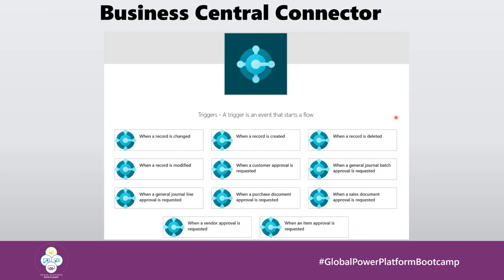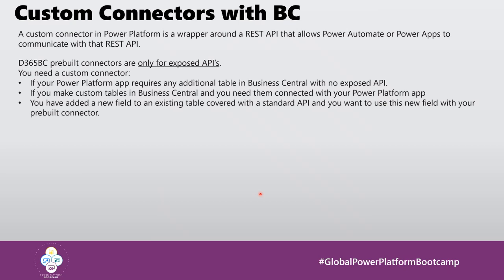A custom connector in the Power Platform is simply a wrapper around a REST API that lets you connect from Power Automate and Power Apps to that REST API. You need a custom connector in Business Central for two main reasons: first, when you have new custom entities defined in Business Central that you want to use in Power Automate or Power Apps; second, when you need to extend a standard entity — for example, if Microsoft exposes the customer entity but you've added custom fields to it in Business Central and want those fields visible in Power Automate and Power Apps.